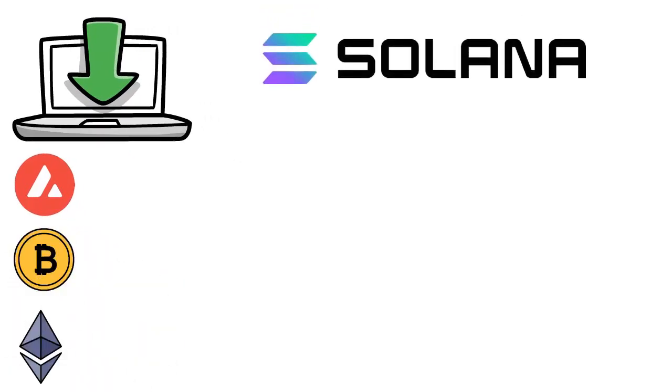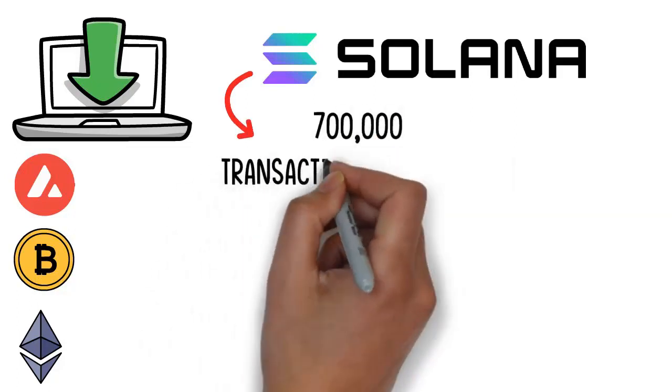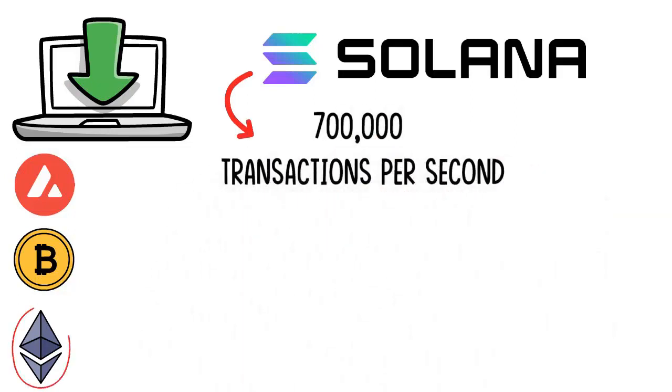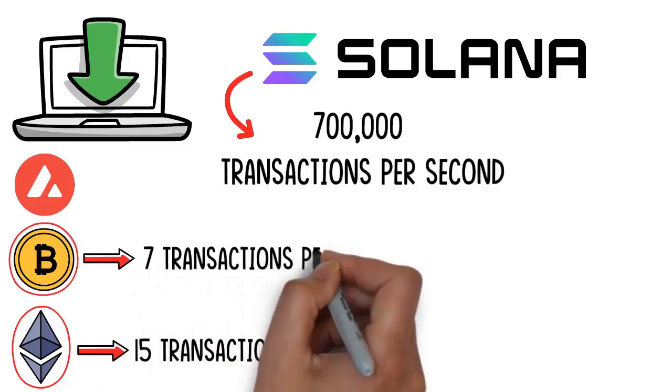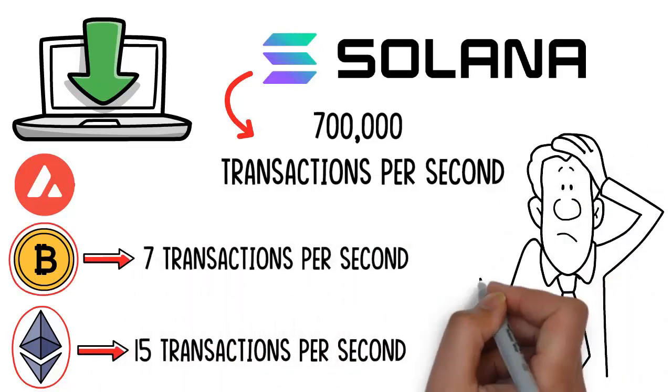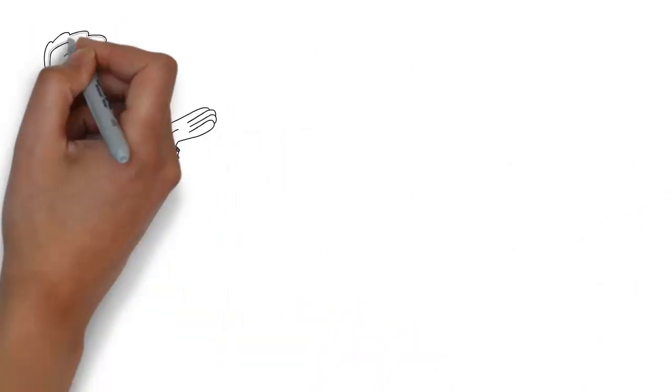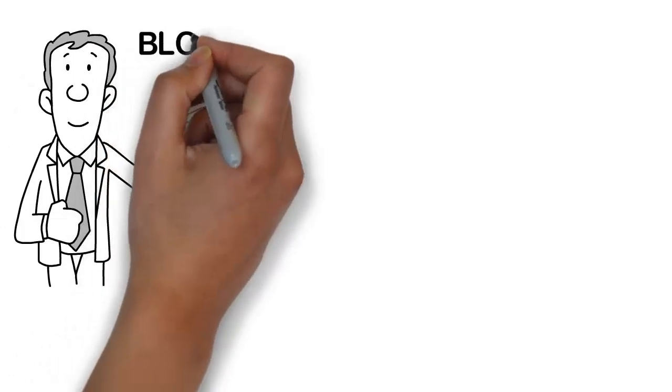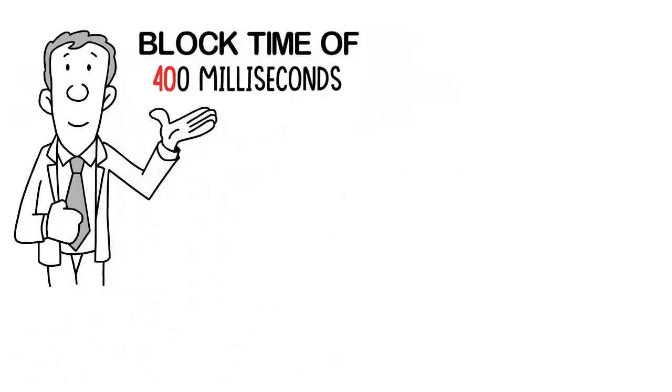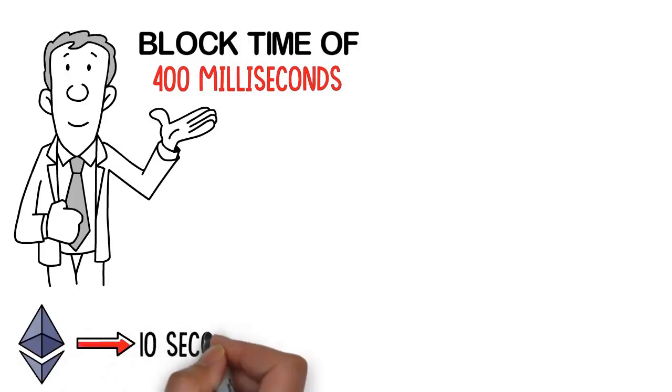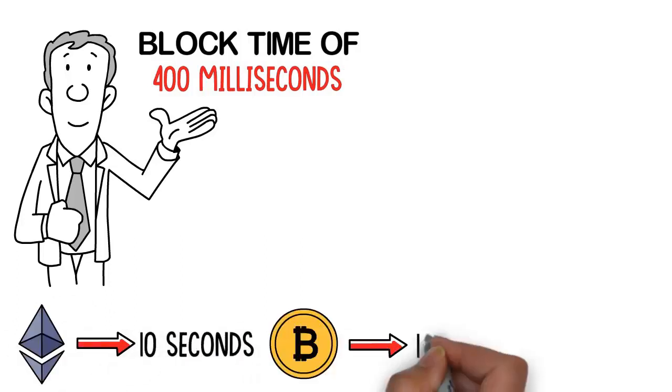Solana's algorithm facilitates 700,000 transactions per second. Compare this to Ethereum at 15 transactions per second and Bitcoin at 7 transactions per second. It's hard to fathom the difference of the scale. I mentioned earlier that they have a block time. Solana has a block time of 400 milliseconds. Compare that to Ethereum's block time of 10 seconds and Bitcoin's 10 minutes.